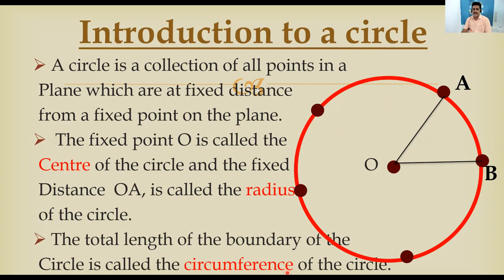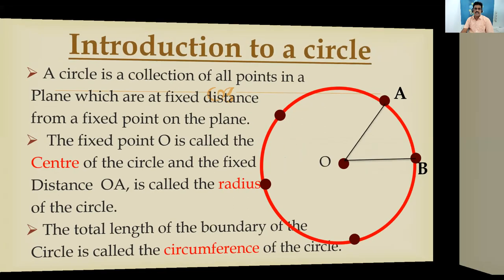In this slide, we have learned: a circle is a collection of all points in a plane at a fixed distance from a fixed point. The fixed point is called the center, the fixed distance is called the radius, and the length of the boundary is called the circumference. Children, write this in your notebook and learn it properly. Whenever asked to define a circle, tell the definition — not just that it looks like a bangle or a ring.